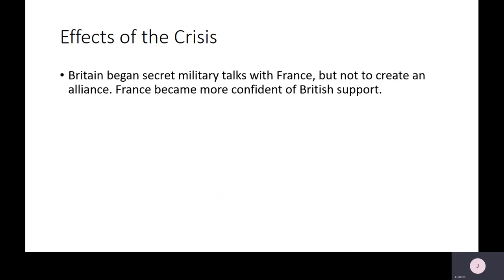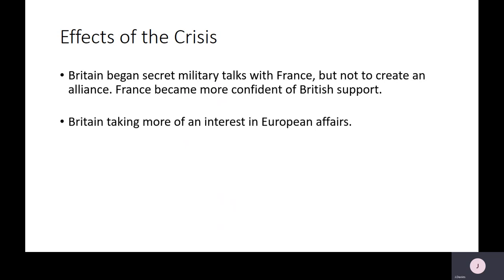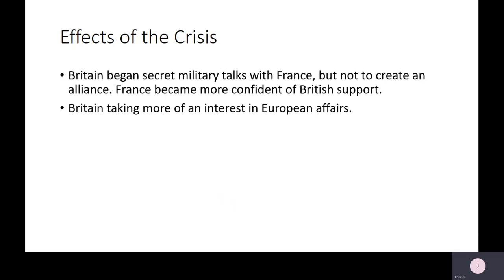Britain now began secret military talks with France. We didn't sign a proper alliance agreement, but France was increasingly becoming more confident of British support. Britain and France increasingly had more in common and were both concerned about this potential threat from Germany. Britain also began to take more interest in European affairs. The Anglo-Russian agreement was signed just a year later, showing how these three entente powers really drew together over this crisis.